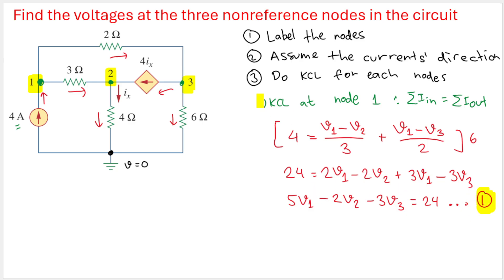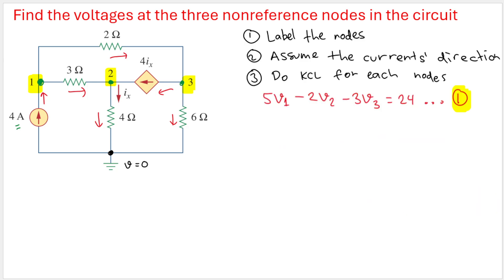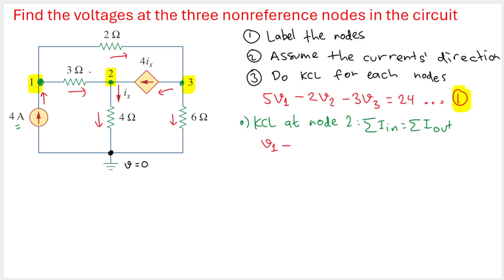Now let's apply KCL at node 2. KCL says the sum of currents in equals the sum of currents out. The current coming in from node 1 to node 2 is (V1 - V2) divided by 3 ohms. There is also the dependent current source 4ix flowing in, so we add plus 4ix on the left-hand side.